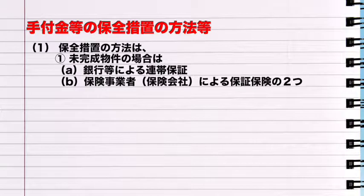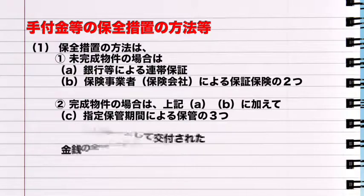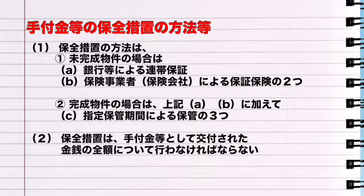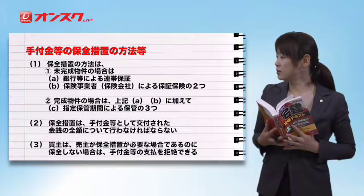続きまして手付金等の保全措置の方法についてです。こちらも未完成物件と完成物件で分かれております。1. 未完成物件の場合：A. 銀行等による連帯保証、B. 保険事業者（保険会社）による保証保険、以上の2つ。2. 完成物件の場合：上記A・Bに加えて、C. 指定保管機関による保管、の3つ。保全措置は手付金として交付された金銭の全額について行わなければならない。また買い主は、売り主が保全措置が必要な場合であるのに保全しない場合は手付金等の支払いを拒絶することができます。